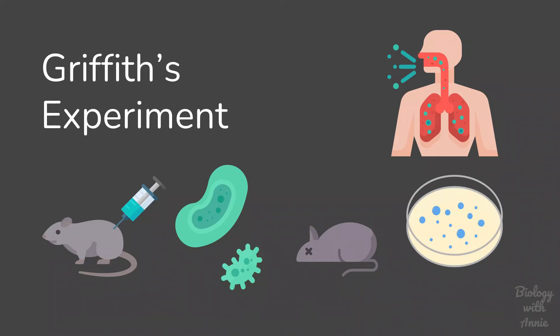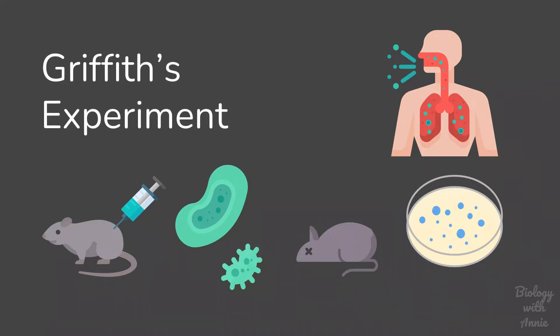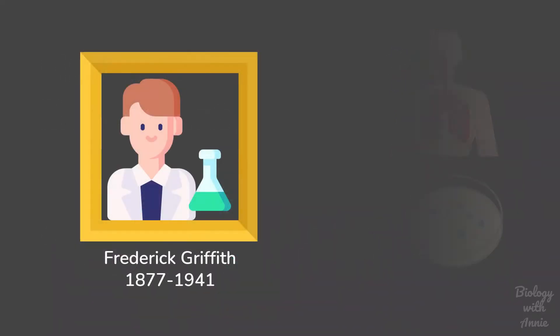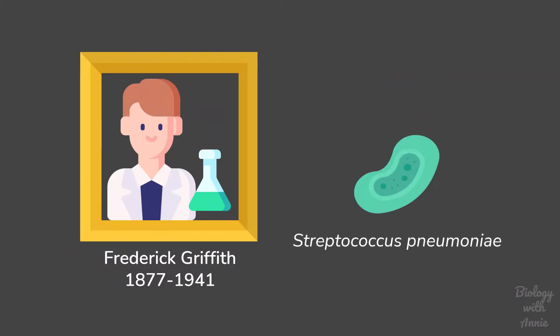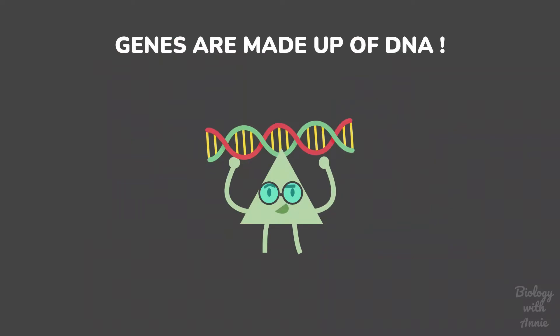Hi everyone and welcome to the channel. This video is to help you understand how Griffith's experiments were performed. Frederick Griffith was a British microbiologist who in 1928 conducted a series of experiments with Streptococcus pneumoniae, the bacteria responsible for pneumonia. While studying the pathology of bacterial pneumonia, he came across a very surprising observation that eventually led to the discovery of DNA as the genetic material.